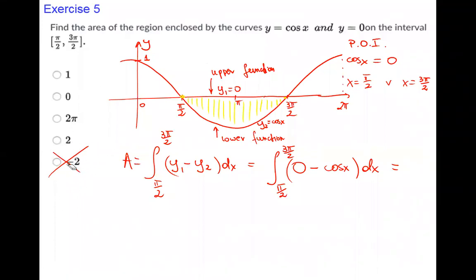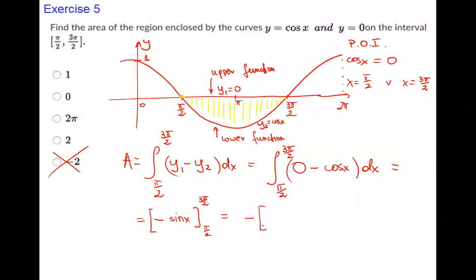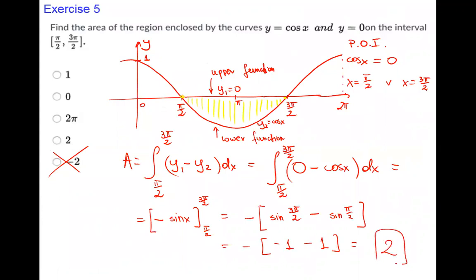Integral of 0 is 0, so we have −∫cos(x) dx = −[sin(x)] from π/2 to 3π/2. This equals −[sin(3π/2) − sin(π/2)] = −[−1 − 1] = −(−2) = 2. The final answer is 2.